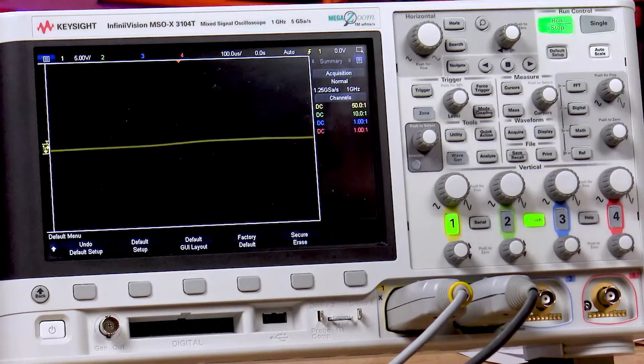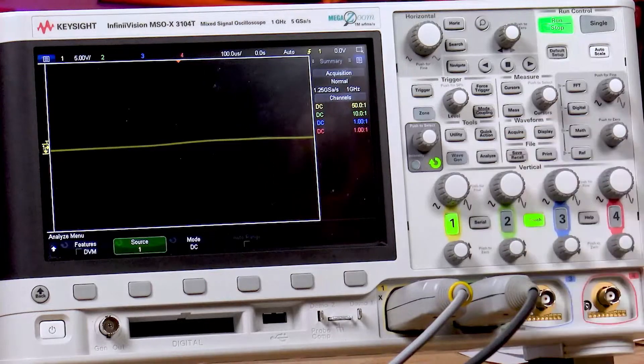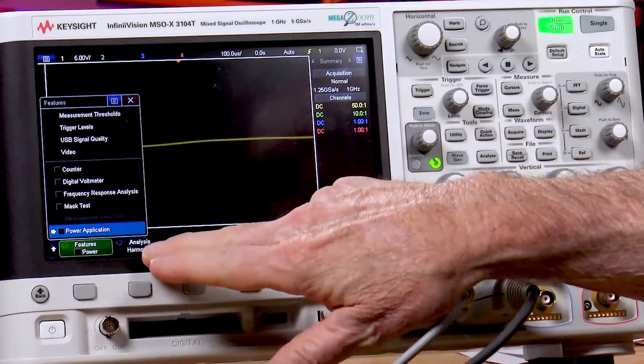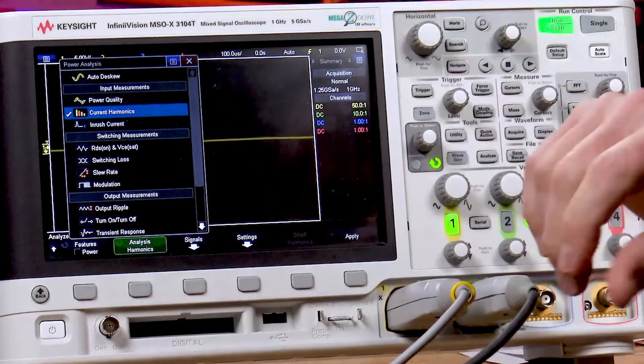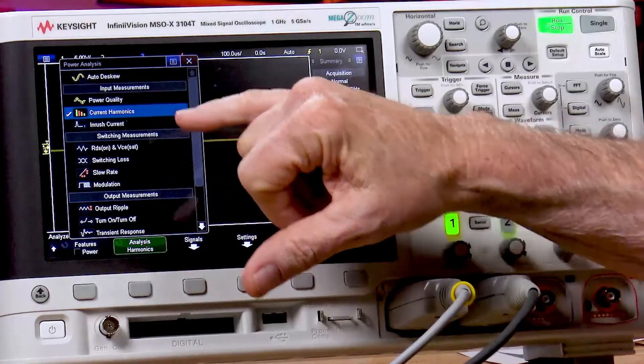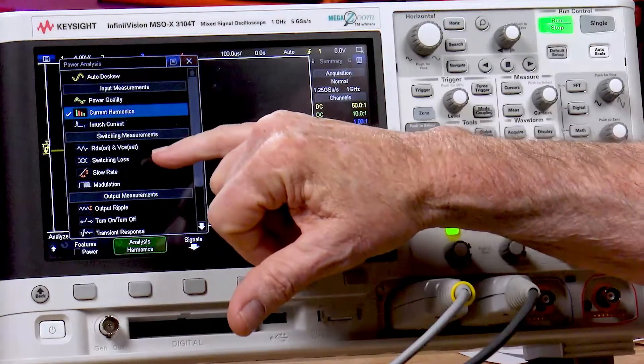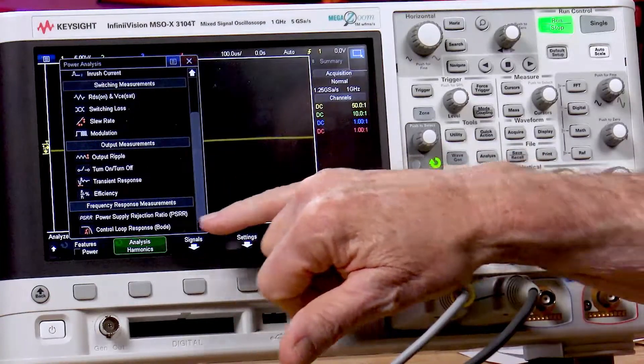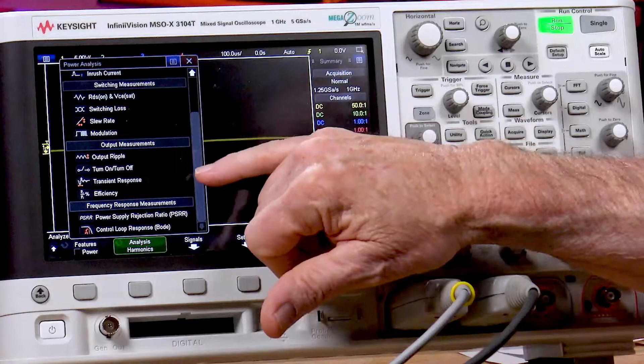To measure what we call AC power quality, I'll go into the Analyze menu, select Power Application, then select Analysis. Here you can see the various automated power measurements I can perform: power quality, inrush current, current harmonics, switching loss, slew rate modulation, and down here at the bottom, we have a couple of frequency response measurements. We'll show that in just a few minutes.